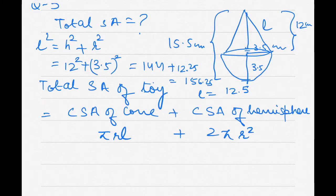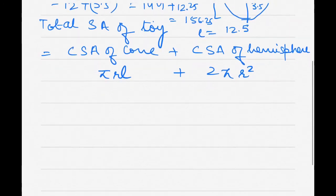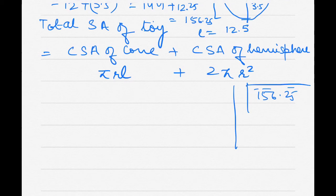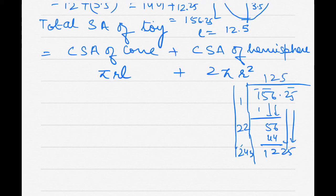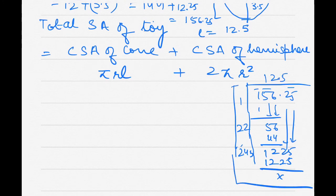To find the square root of 156.25 using the division method, we make pairs: 1, 56, 25. Working through the steps gives us 12.5. So l equals 12.5 centimeter.